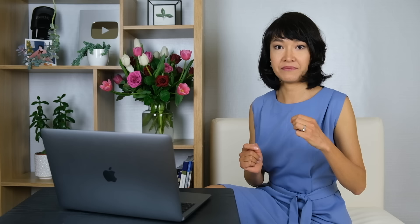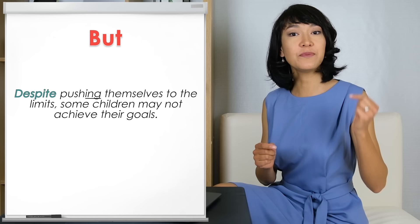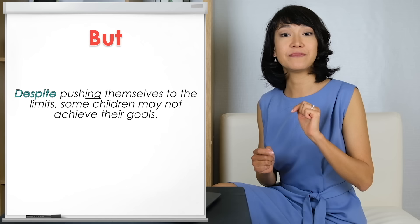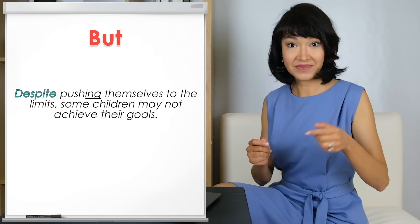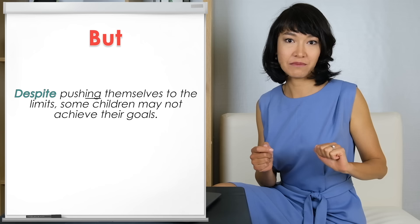Another very useful linking word to show contrast is DESPITE. But the grammar of this word is different from the others. Usually in English there is a pattern of subject-verb-complement, for example in 'although this message can inspire some children.' DESPITE is followed by a different form — usually a gerund. Look at how it works: 'Despite pushing themselves to the limits, some children may not achieve their goals.' We do not use a subject and verb after DESPITE — it's just the gerund 'pushing.' The subject 'some children' appears in the other part of the sentence after the comma.